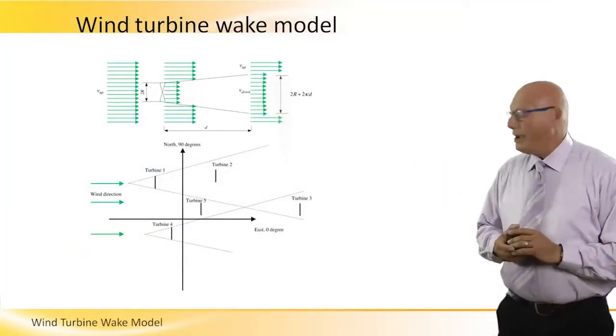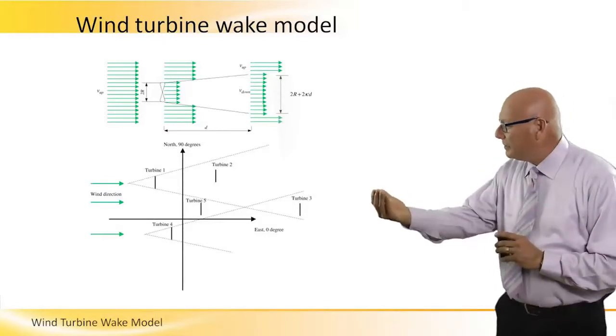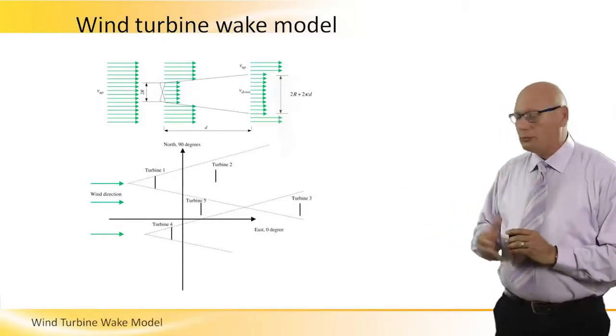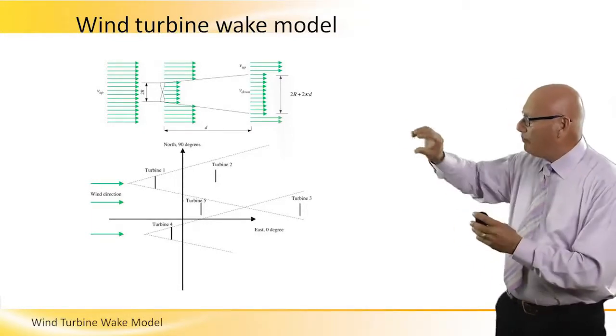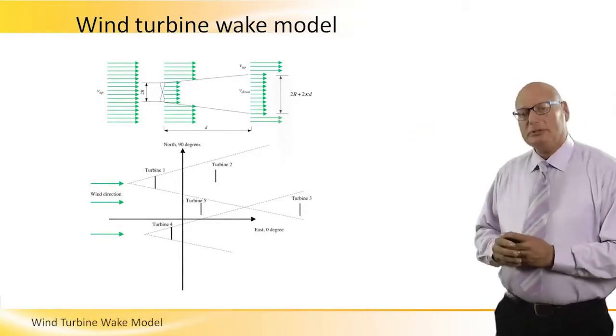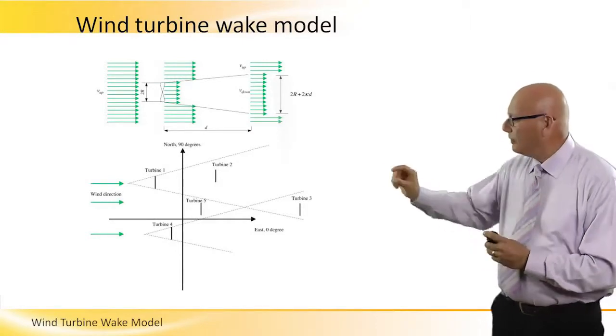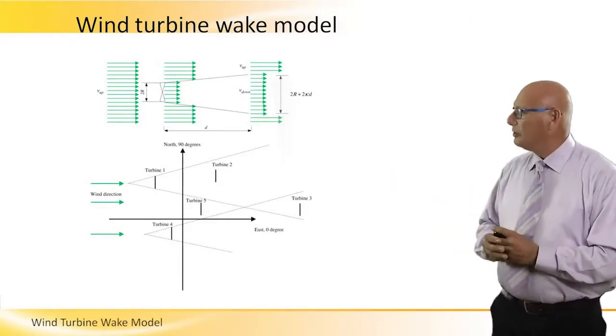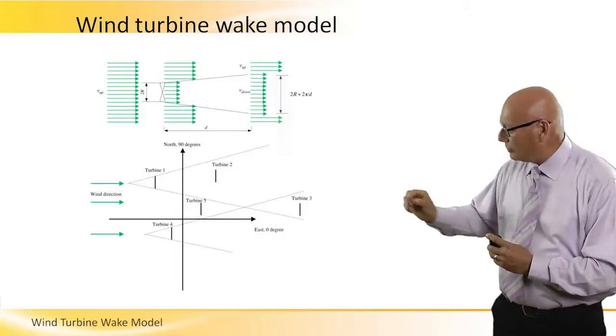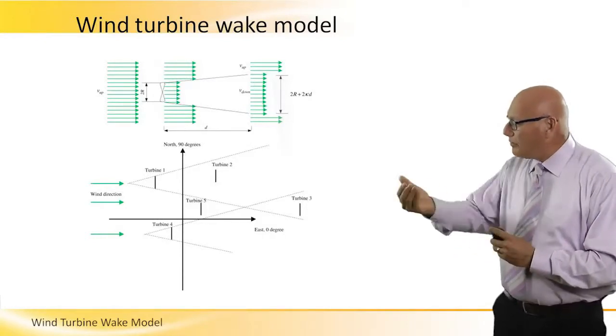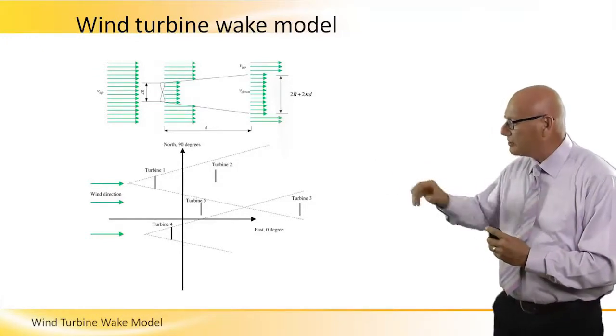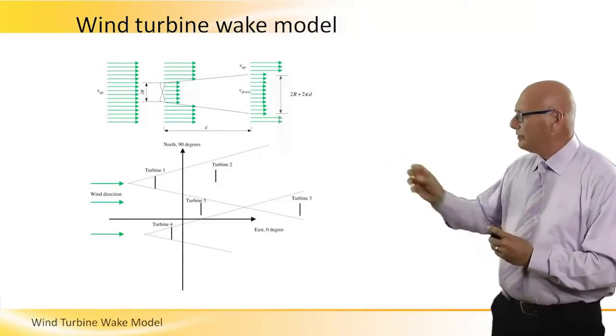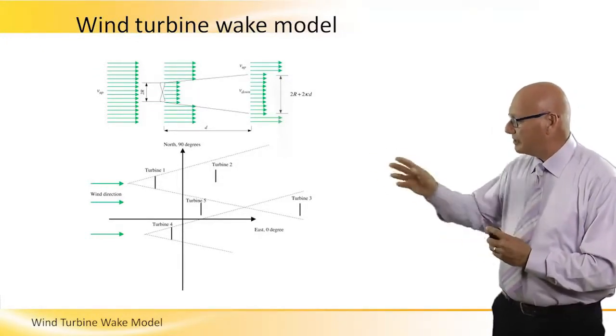And this is a model of a wake. 100% of the wind coming from the left, we can see it on the top part of the picture. Part of it goes above the rotor itself, part of it goes on the bottom, and part of it really gets into the rotor. That's on the center part of the presentation.